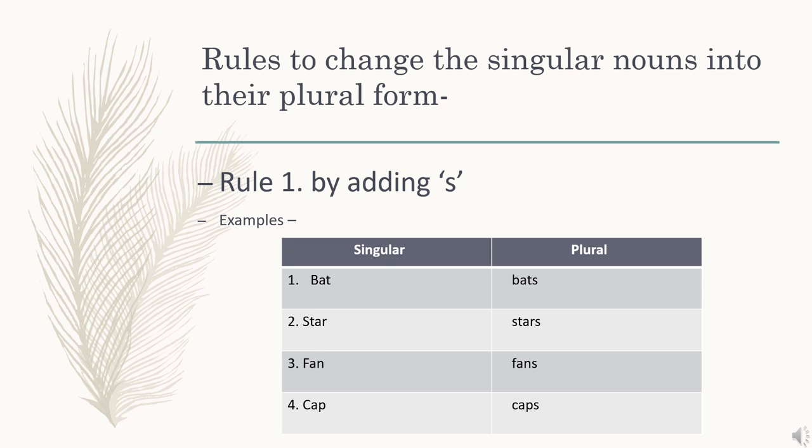Now we will learn how to change the singular nouns into their plural form. For this, we must know some rules. I have mentioned 10 rules which will help you to learn this. Rule number 1: by adding s. According to this rule, we add an s at the end of a word to make its plural form. For example: bat becomes bats, star becomes stars, fan becomes fans, cap becomes caps.